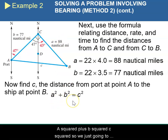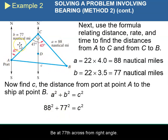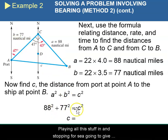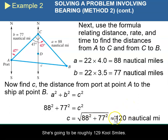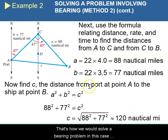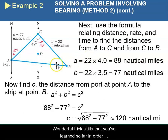A squared plus B squared equals C squared. We square our terms, add them together, and take the square root. A is 88 because it's across from our angle A; B is 77, across from angle B. Plugging all this in and solving for C gives the square root of 88 squared plus 77 squared, which is going to be roughly 120 nautical miles. So that's how we would solve a bearing problem — you draw the picture reflecting what's going on, then apply your trig skills to answer the question.